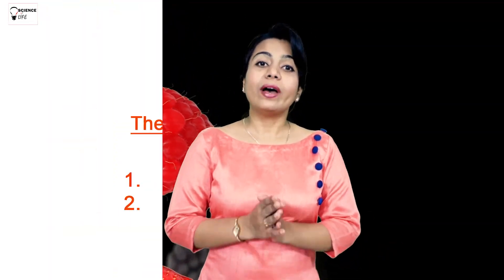The fourth category is vitamins. As discussed in our previous video, vitamins are needed for healthy functioning of our body and to fight diseases. They keep us healthy and help fight diseases. Sources of vitamins include carrot, orange, and sunlight. These are needed for healthy functioning of our body.